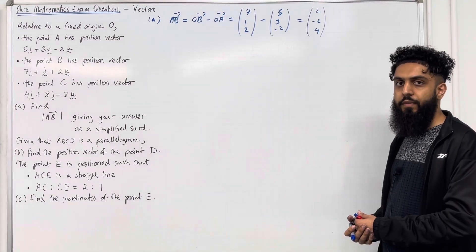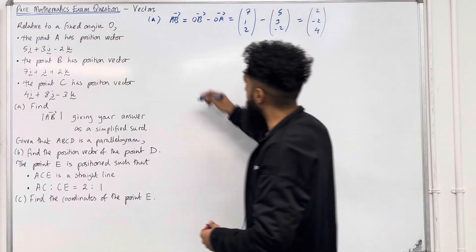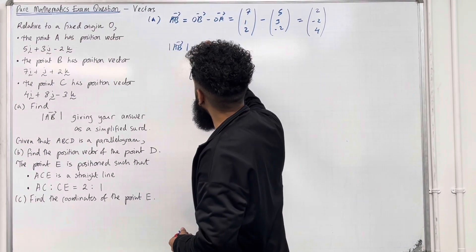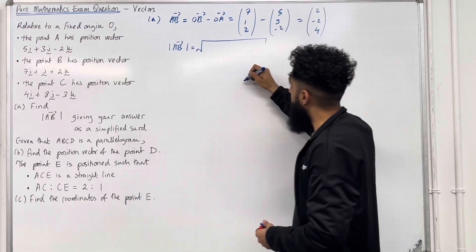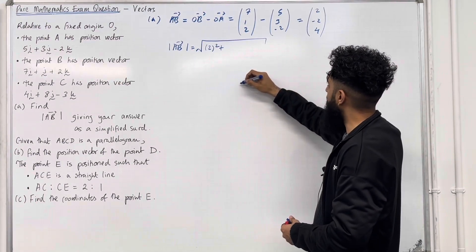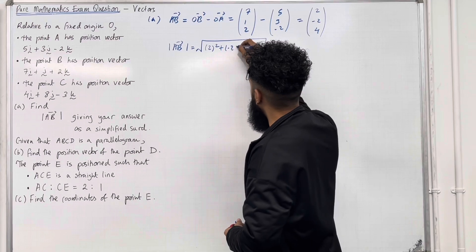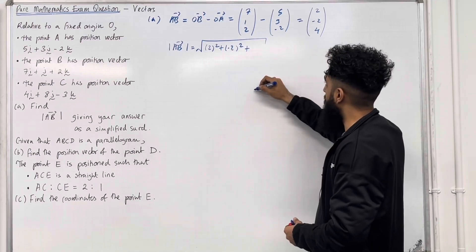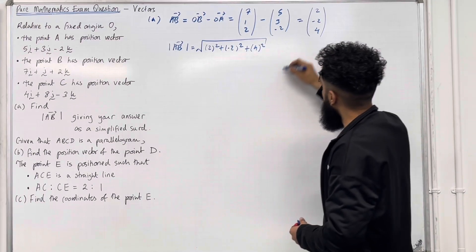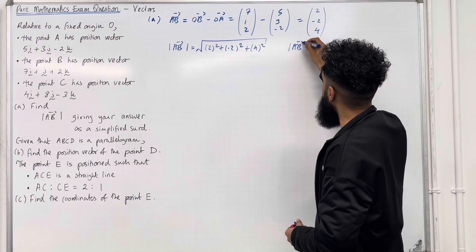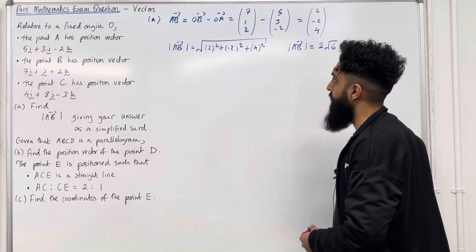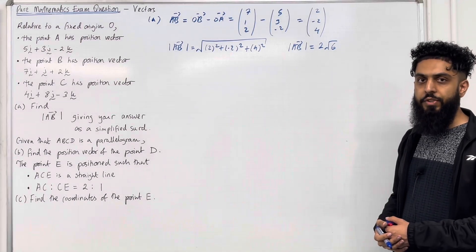Now I can take the magnitude of the vector A to B. The magnitude is given by the square root of the i-component squared plus the j-component squared plus the k-component squared: √(2² + (−2)² + 4²). So the magnitude of vector AB as a simplified surd is 2√6. This completes part A.